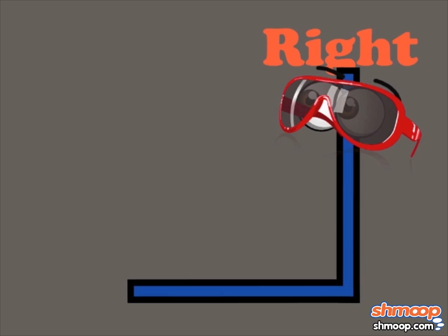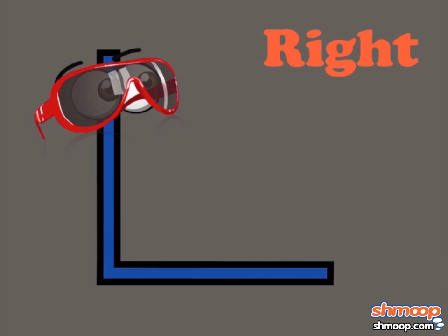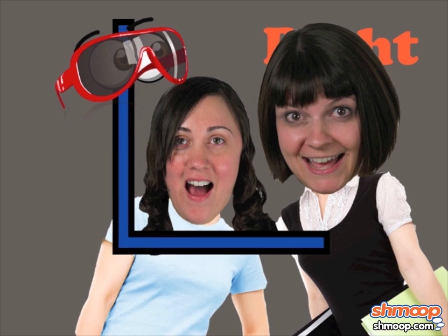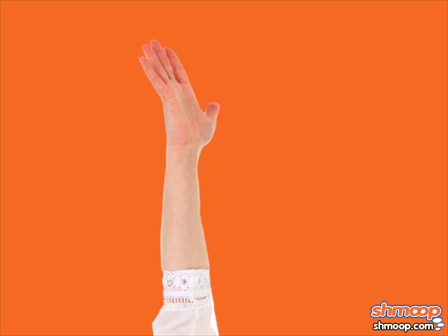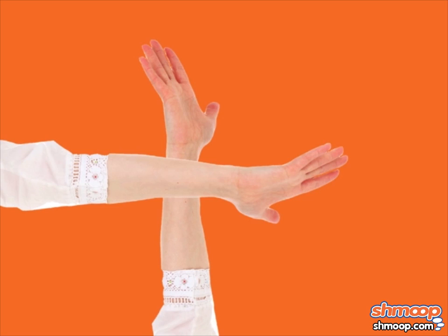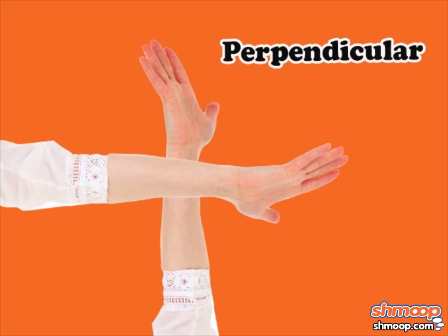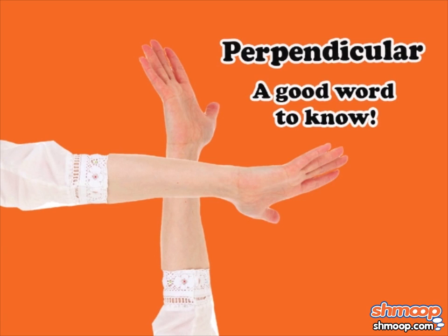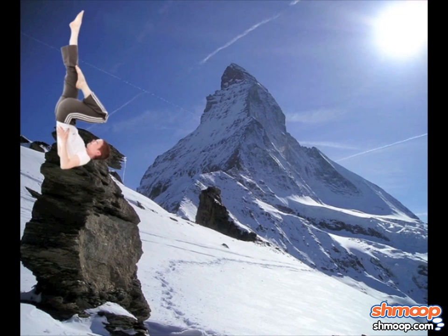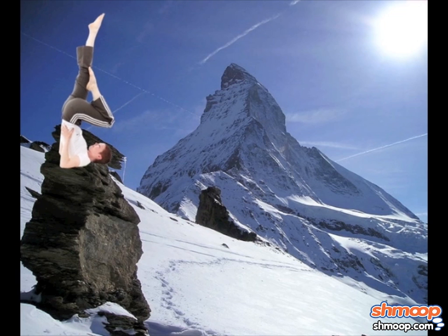A right angle is an angle that's exactly 90 degrees, which means it is formed when two straight lines meet in a perpendicular fashion. Or when some yoga master bends in a really zany way.